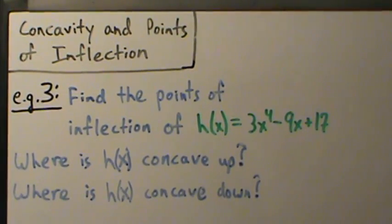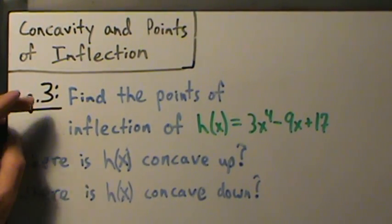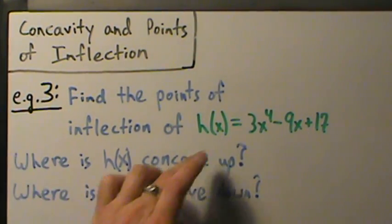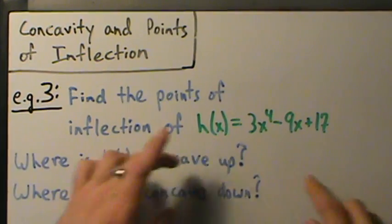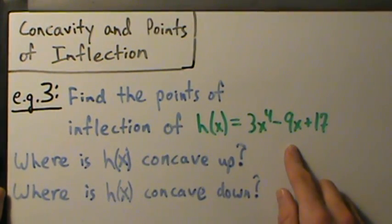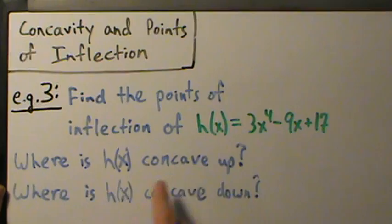Alright, here's example 3 with concavity and points of inflection. Same as the last two videos, different function. Find the points of inflection of h of x equals 3x to the 4th minus 9x plus 17. And also, where is h of x concave up? Where is it concave down?